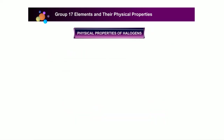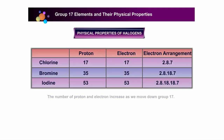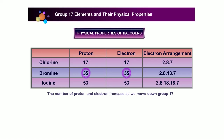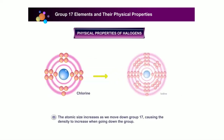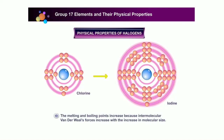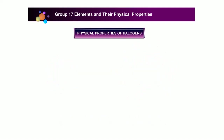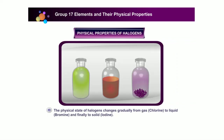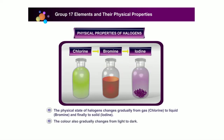Physical properties of halogens when moving down the group: the number of protons and electrons increases, and the atomic size increases, raising the level of density. The melting and boiling points increase because intermolecular van der Waals forces increase with molecular size. The physical state changes gradually from gas to liquid and finally to solid, and the colour of the halogens gradually changes from light to dark.